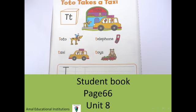Toto takes a taxi. In your student book, page 66, Unit 8, you'll find this page. It talks about T capital letter and T small letter, and it talks about Toto the dog and his telephone, his taxi, and his toys. Toto wants to go to the toy store to buy toys.